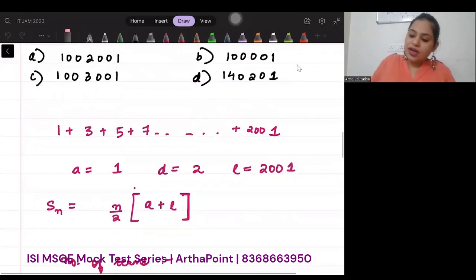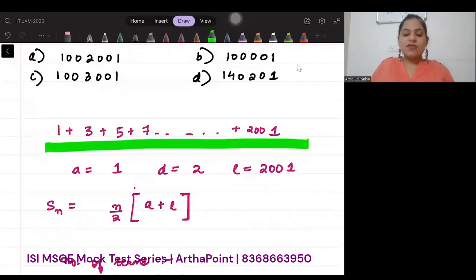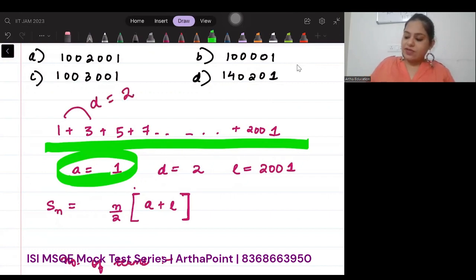So I want to find this sum from 1 till 2001. My first term is 1, and my difference D is 2, and my last term L is 2001.